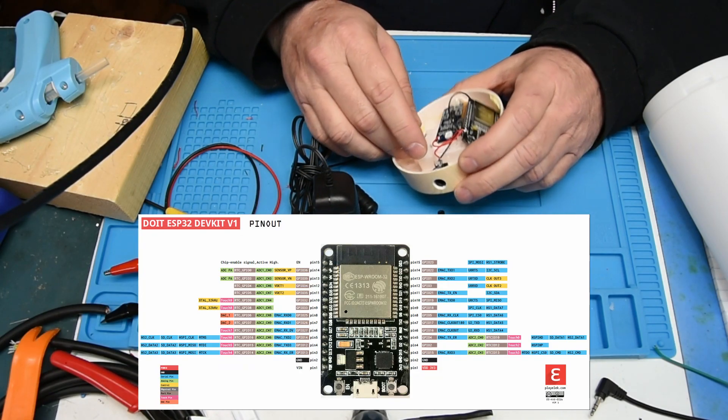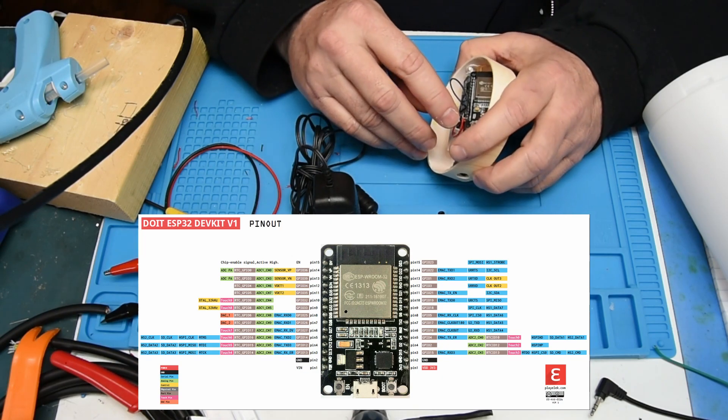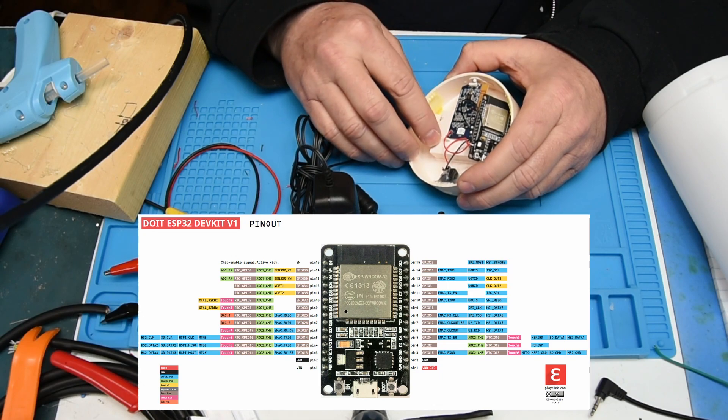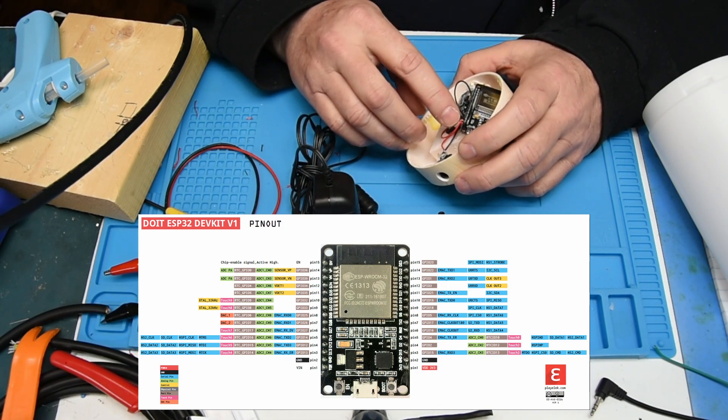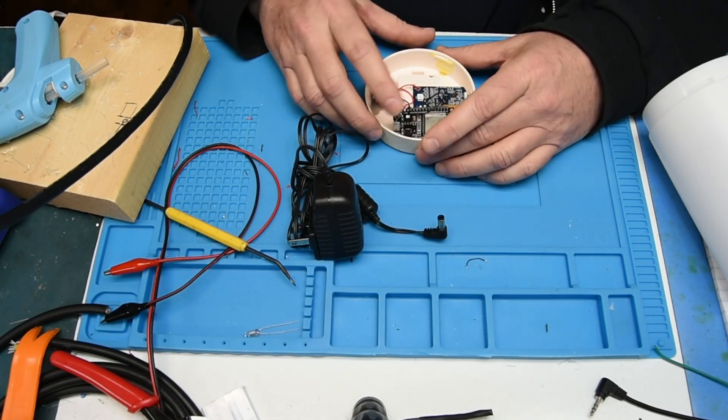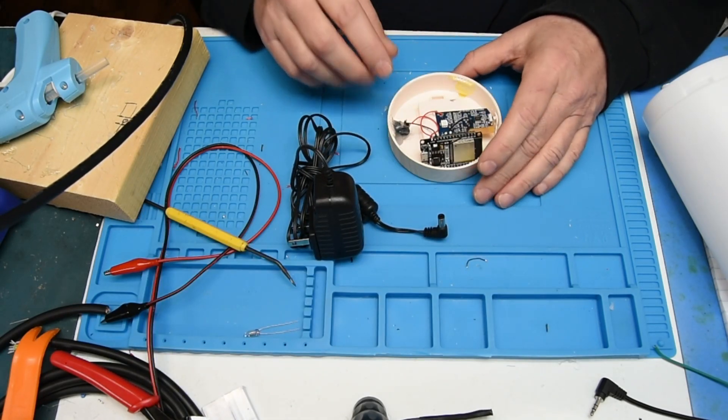I ran five volts to the VN and the five volts to the lamp circuit, and then I ran ground to the ground and the ground to the lamp circuit. Then I glued the ESP32 in here.